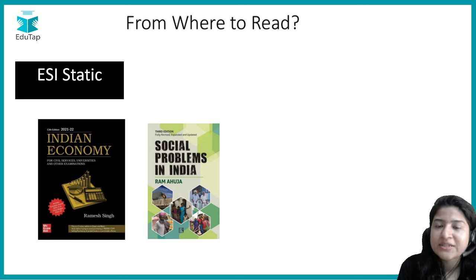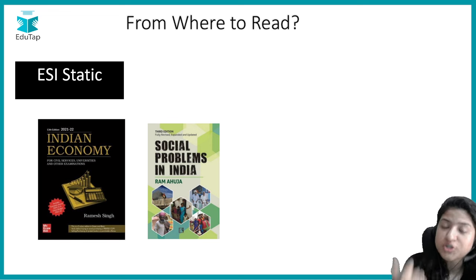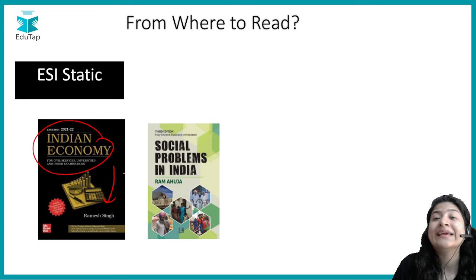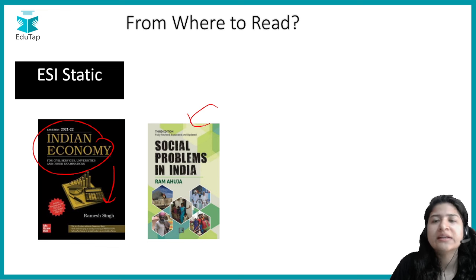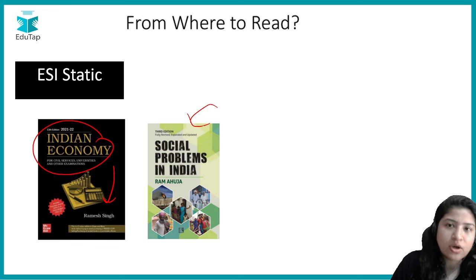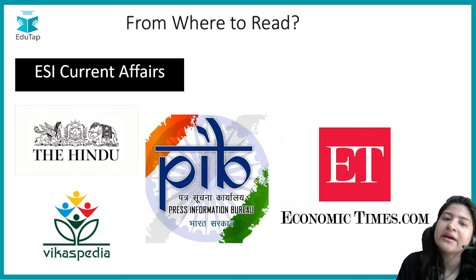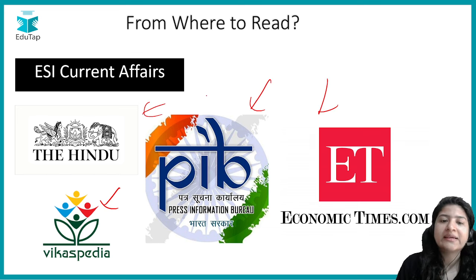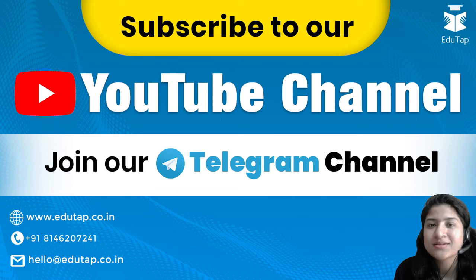To summarize: we've understood the syllabus, the importance of static vs current affairs, the types of questions asked, and the most important static topics. For study resources: for static, refer to Indian Economy by Ramesh Singh — but stick to the syllabus and don't study in excessive depth. For social issues, being thorough with current affairs is sufficient; for basic static background, refer to Social Problems in India by Ram Ahuja. For ESI current affairs, refer to Vikas PDA for government schemes, and PIB, Economic Times, and The Hindu for broader ESI current affairs.